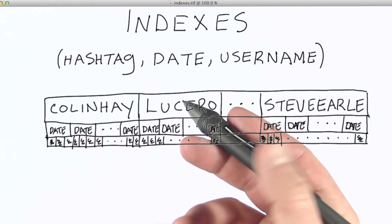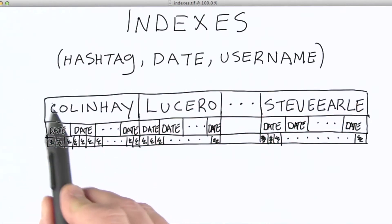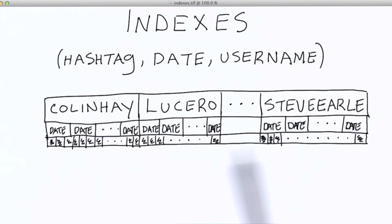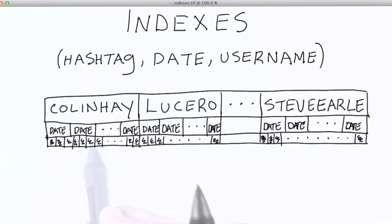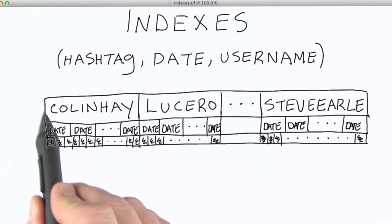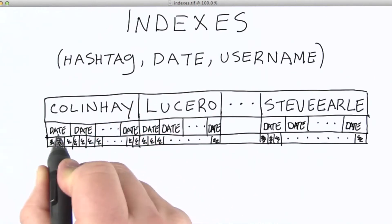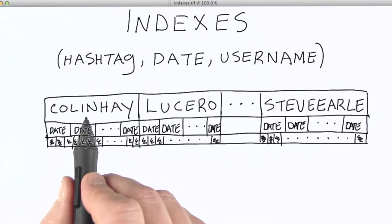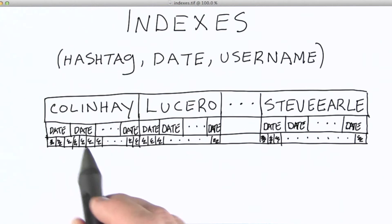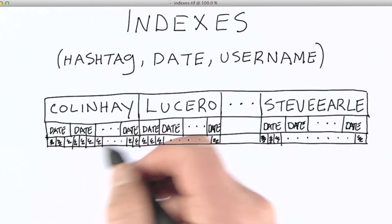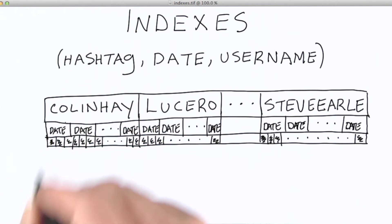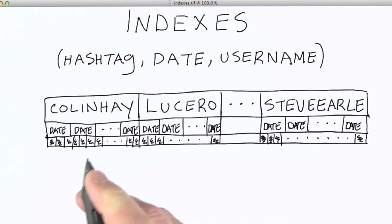Because conceptually, the way the index is built is that the hashtag will be at the top. So here are my hashtags, Colin Hay, Lucero, and then Steve Earl near the end of my index. And then within this, so let's say Colin Hay is conceptually here. For all of those items, we'll have dates as the second level of our index. And what we're going to do within the Colin Hay portion of the index is sort these by order of date. So the documents then that are identified down to this level of date are first identified by the hashtag Colin Hay, and then sorted based on their date of creation.